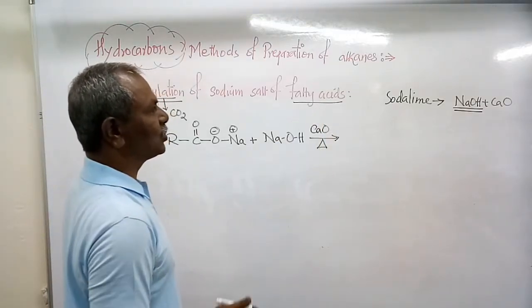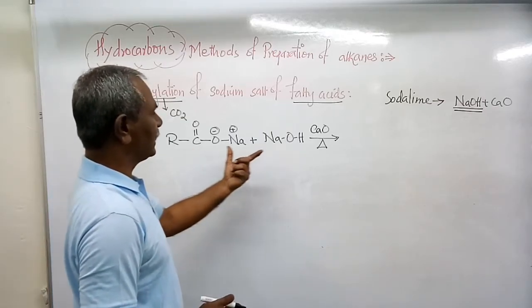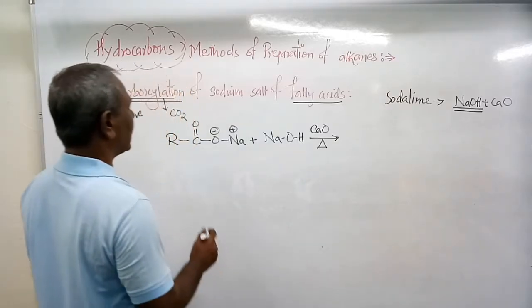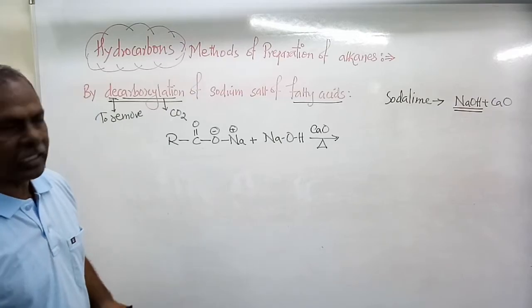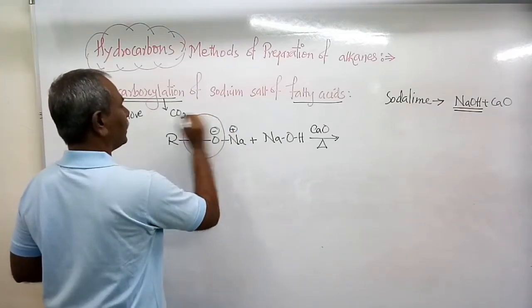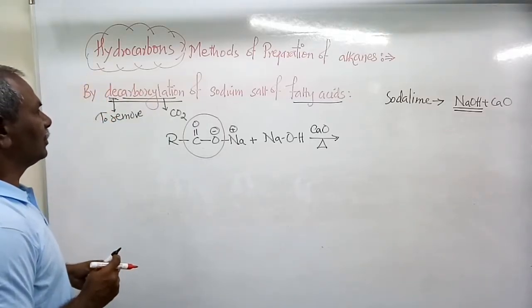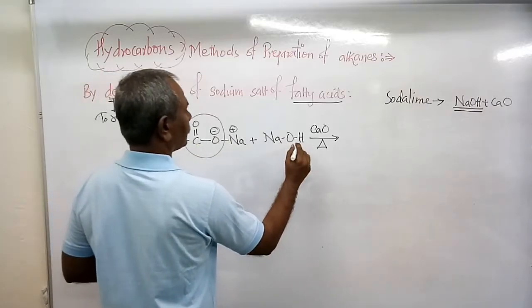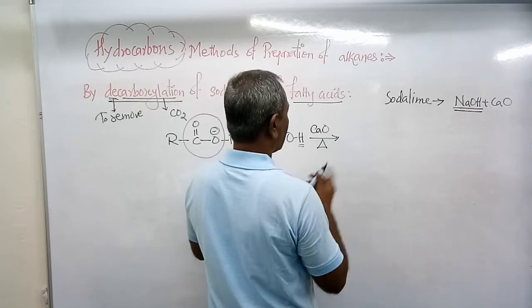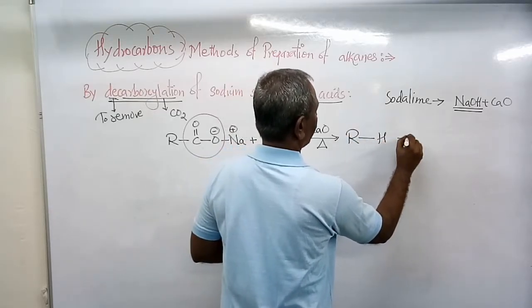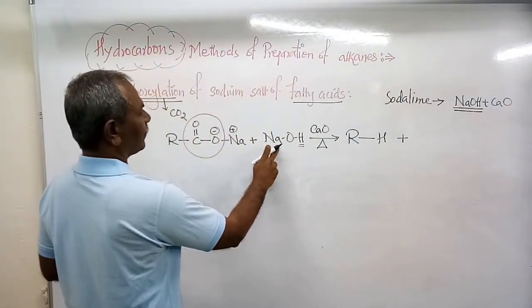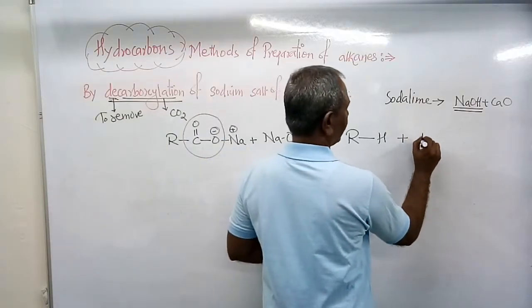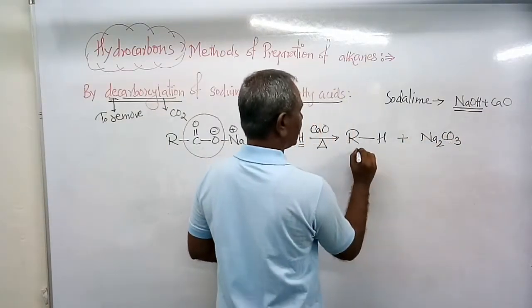When sodium salt of fatty acid is heated with sodium hydroxide in presence of calcium oxide, decarboxylation occurs with removal of CO2. The products are an alkane plus Na2CO3.